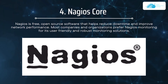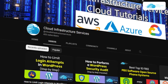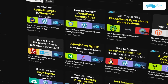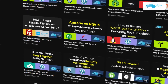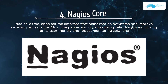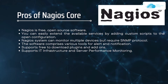Number four on our list is Nagios Core. Nagios is a free open source software that helps reduce downtime and improve network performance. Most companies and organizations prefer Nagios monitoring for its user-friendly and robust monitoring solutions. If you want to deploy Nagios Core on Azure, AWS, or GCP, you can check out the videos in the channel. Nagios is free open source software and you can easily extend the available services by adding custom scripts to the open configuration.